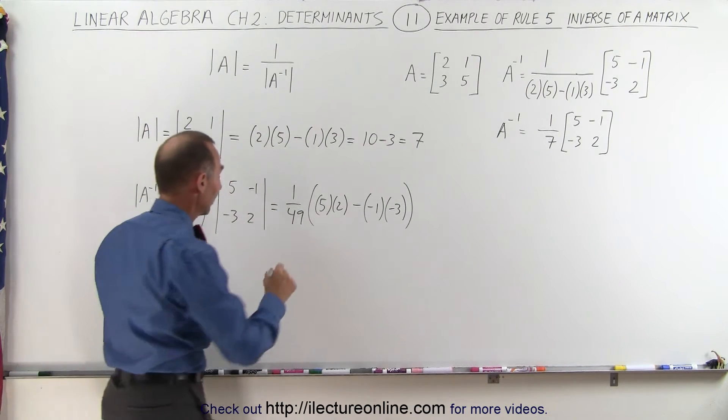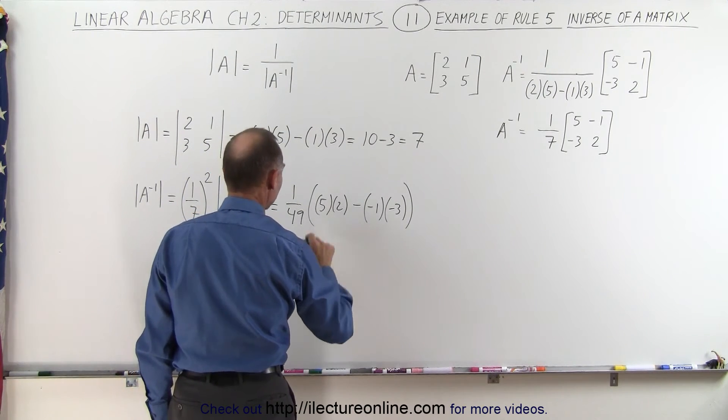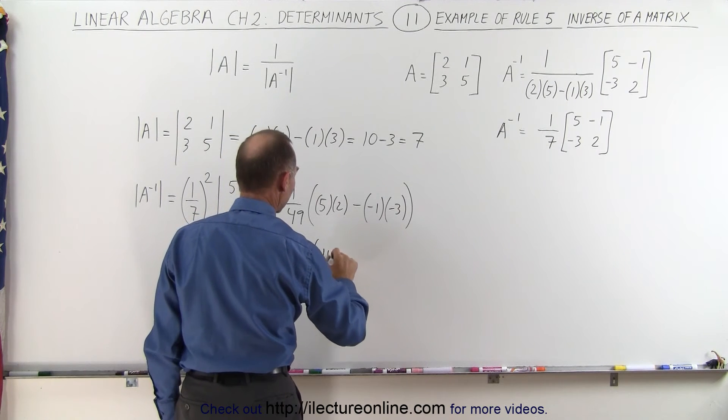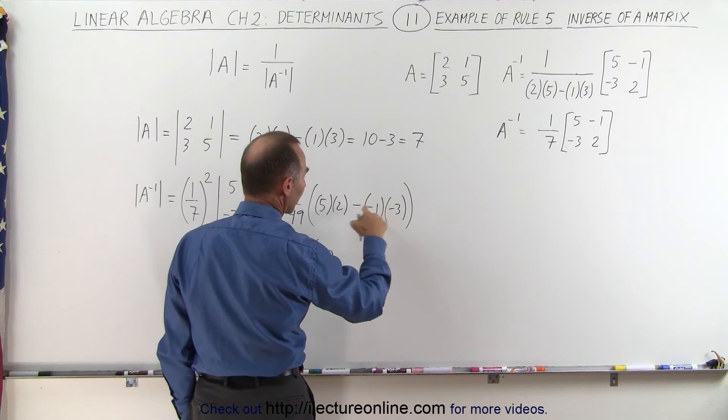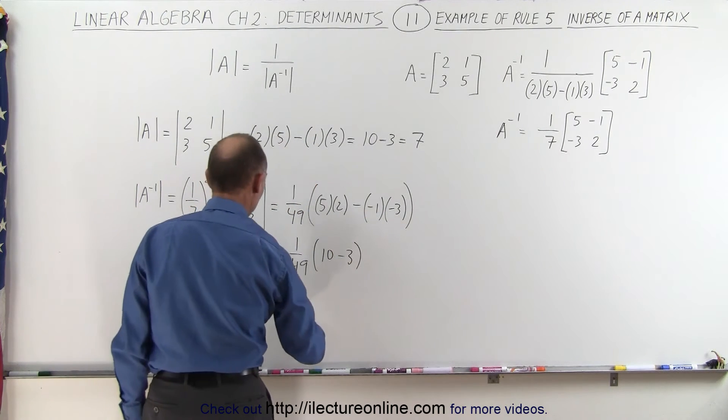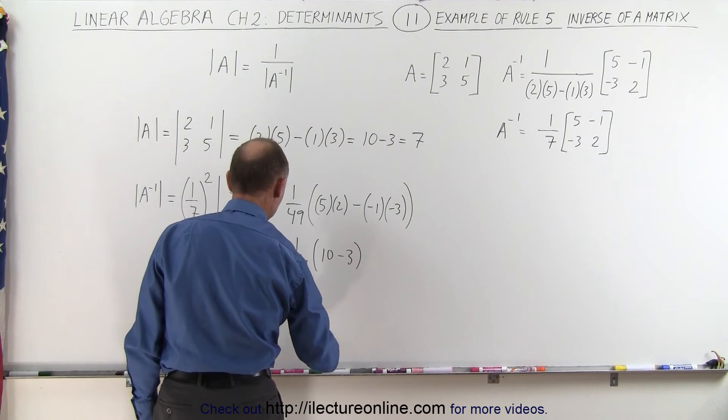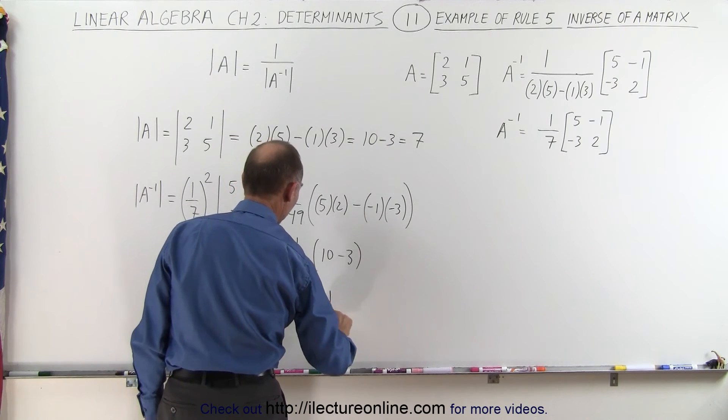Simplifying that, this is equal to 1 over 49 times—that's 10 minus 3 because this times this gives us a positive 3—which means this is equal to 7 over 49 or 1 over 7.